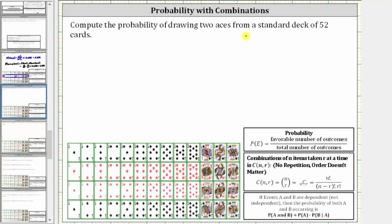We have to compute the probability of drawing two aces from a standard deck of 52 cards. We'll take a look at two ways of determining this probability.